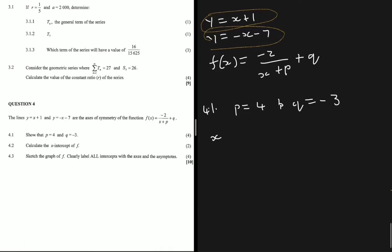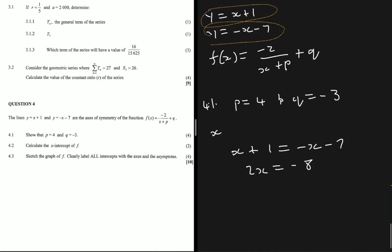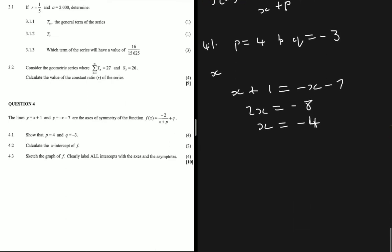So if we go ahead and do that, we get x plus 1 equals minus x minus 7. Taking minus x to the left-hand side, we get 2x equals minus 8, then x equals minus 4. And then we know x equals minus 4, but what is y?